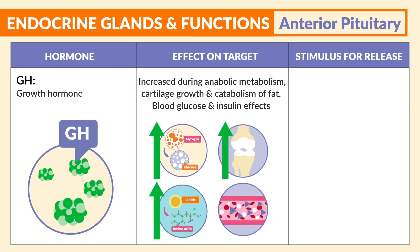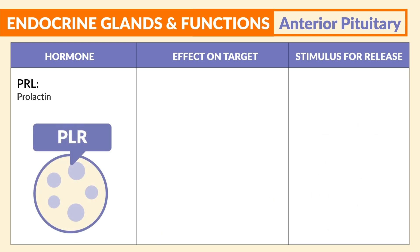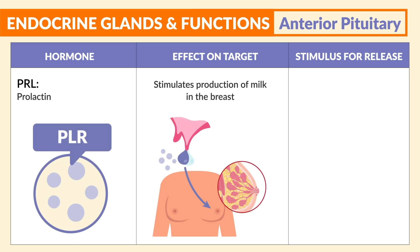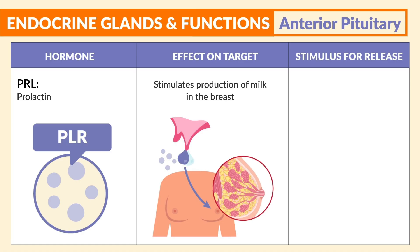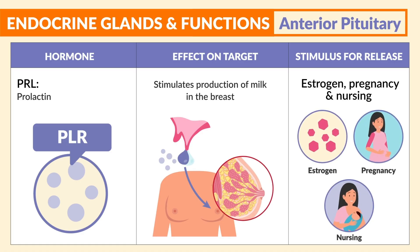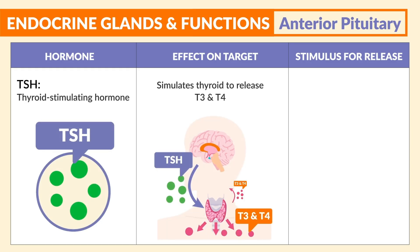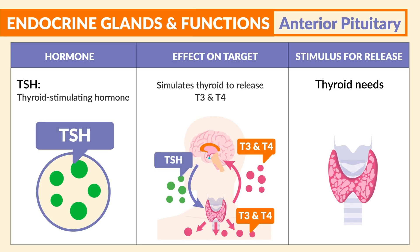Next is PRL, prolactin — it stimulates the production of milk in the breast, and the stimulus for release is estrogen, pregnancy, and nursing. Next is TSH, the thyroid stimulating hormone — it stimulates the thyroid to release T3 and T4 for thyroid needs.